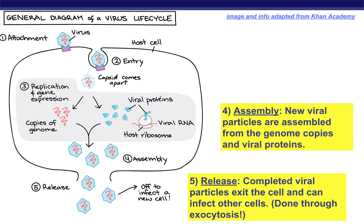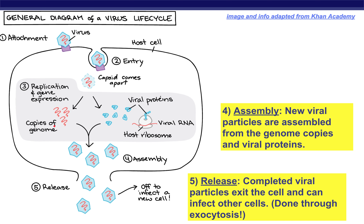Either way, both methodologies result in lots of viral proteins being made and viral genomes being made, and eventually there's a pretty big buildup of both inside the cell and they start spontaneously assembling into viruses. Once completely made, those viruses start being released. Sometimes they exit gently one or two at a time through exocytosis, and sometimes millions of viruses build up inside the cell until it explodes and bursts apart, releasing viruses to float around to the next uninfected cell to start a new cycle.